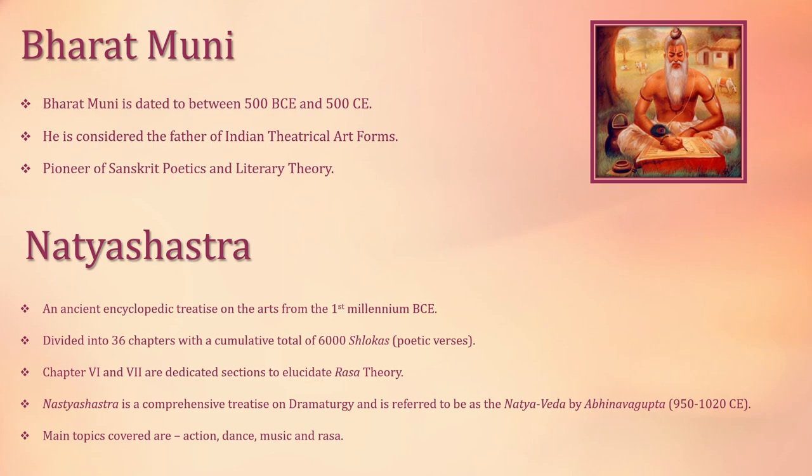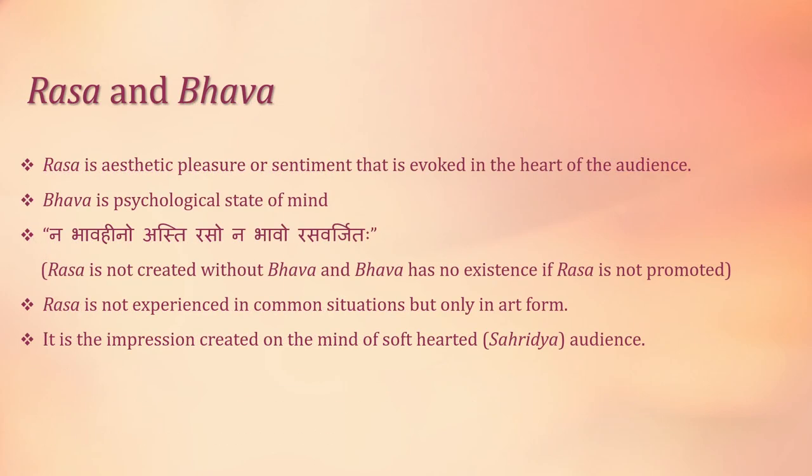The theory of rasa is elaborated in the sixth and seventh chapters. I have already told you that this treatise includes 36 chapters, and in the sixth and seventh chapters you will find the elaboration of rasa theory. Now what is rasa and what is bhava? What is the relation between them? What's their role in literature and why are they important for us to know? We will discuss all about it in further slides.